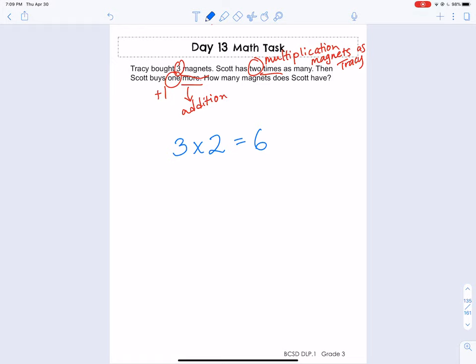And then it says then Scott buys one more. So six plus one equals seven. How many magnets does Scott have? Scott has seven magnets.